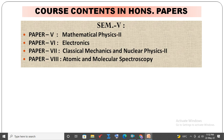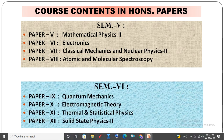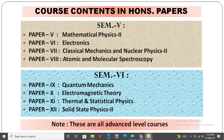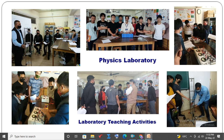Course contents in honours papers. In the fifth semester, you have four theory papers: Paper 5, Mathematical Physics 2; Paper 6, Electronics; Paper 7, Classical Mechanics and Nuclear Physics 2; Paper 8, Atomic and Molecular Spectroscopy. In the sixth semester, you also have four theory papers: Paper 9, Quantum Mechanics; Paper 10, Electromagnetic Theory; Paper 11, Thermal and Statistical Physics; Paper 12, Solid State Physics 2. Besides these theory papers, there are also practical papers — eight practical papers in total in the honours course, done in the physics laboratories.